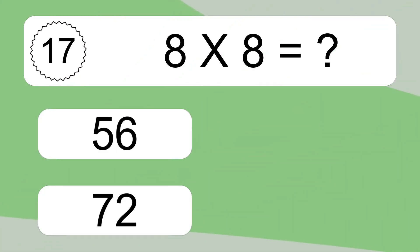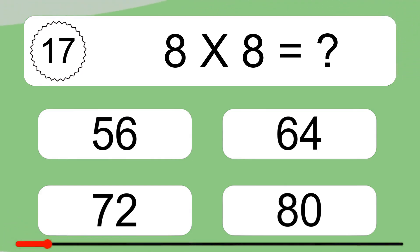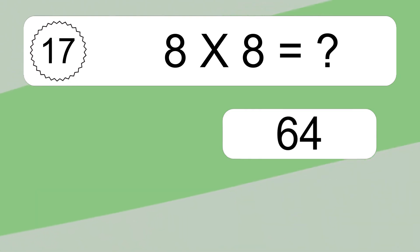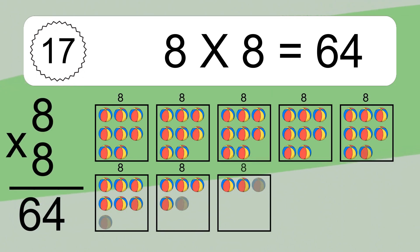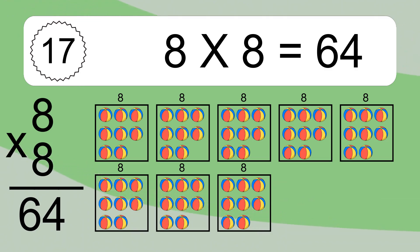8 times 8 equals what? 8 times 8 equals 64. We have 8 boxes, and each box has 8 colorful balls inside. If you count all the balls in all the boxes together, you will have 8 times 8 balls. This equals 64 balls.